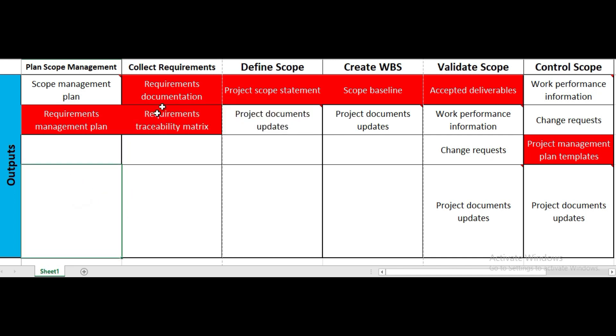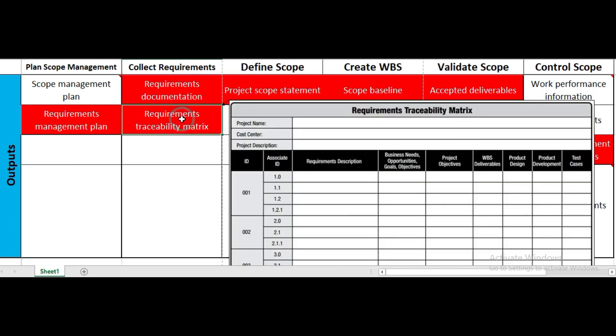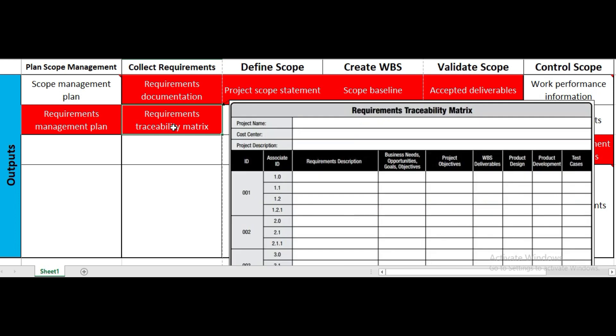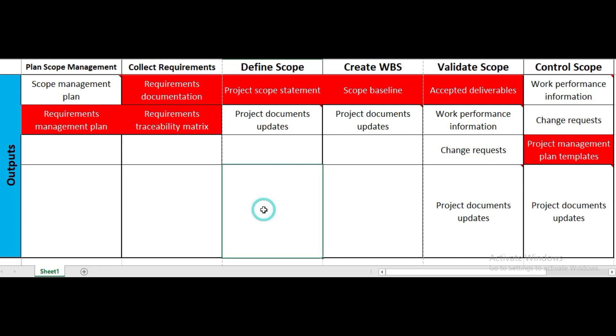The outputs of collect requirements are requirements documentation and the requirements traceability matrix. Requirements documentation may include quality requirements, project requirements, solution requirements, and business requirements. The requirements traceability matrix tracks how different requirements relate to project deliverables.